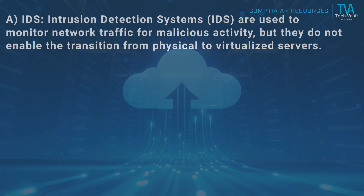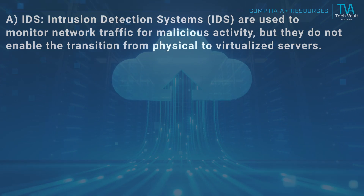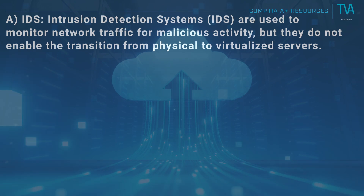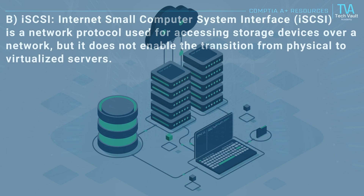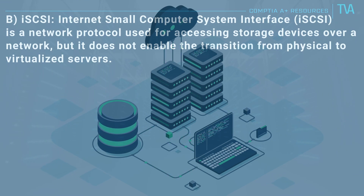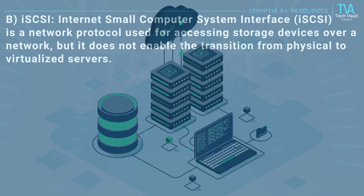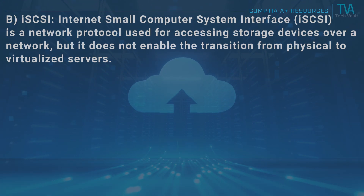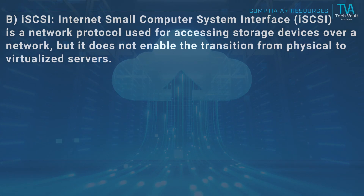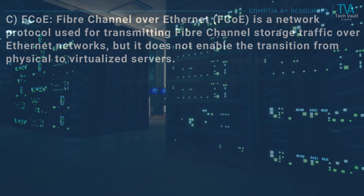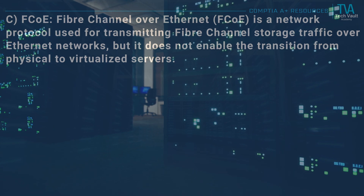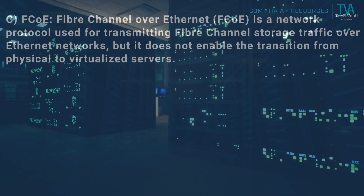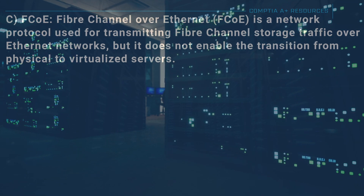A, IDS: intrusion detection systems are used to monitor network traffic for malicious activity but do not enable the transition from physical to virtualized servers. B, iSCSI: Internet Small Computer System Interface is a network protocol used for accessing storage devices over a network, but it does not enable the transition from physical to virtualized servers. C, FCoE: Fibre Channel over Ethernet is a network protocol used for transmitting Fibre Channel storage traffic over Ethernet networks, but it does not enable the transition from physical to virtualized servers.